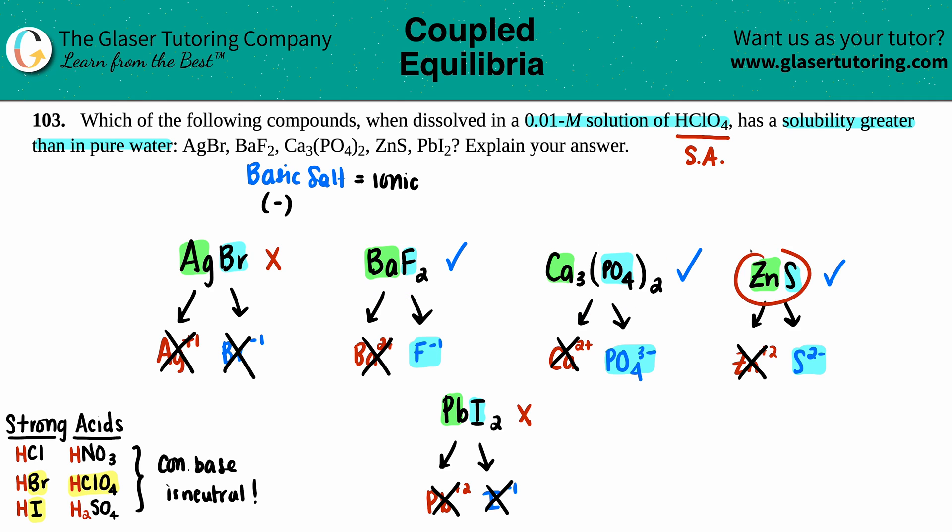BaF2, Ca3(PO4)2, and ZnS—all of those would have a solubility greater in that HClO4 than in water. And that's it. I really hope this helped.